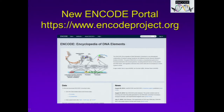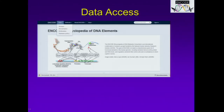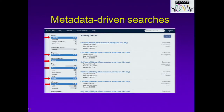There is a new ENCODE portal at www.encodeproject.org, hosted by Stanford University as the Data Coordination Center. We hope that the community will find the enhancements on this portal useful in accessing the data. If you click on the Data tab, you can get access to the assays, the biosamples, and the antibodies and their characterization. There are metadata-driven searches that can really help narrow down to get to the data types of interest.